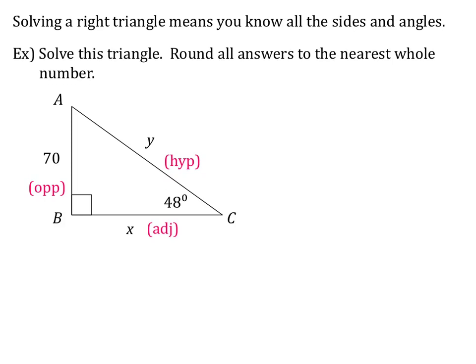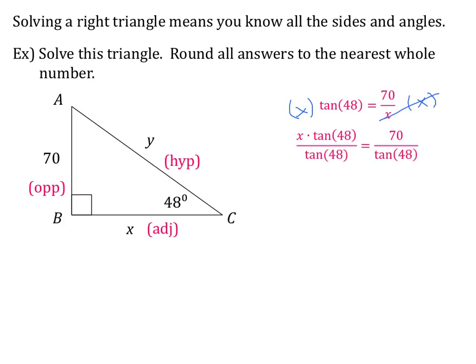70 and x have an opposite and adjacent relationship, so I'll use TOA — tangent. Tangent of 48 equals 70 over x. Multiply both sides by x so it cancels on the right: x times tangent of 48 equals 70. Then divide both sides by tangent of 48 to isolate x: x equals 70 over tangent of 48. Plugging into the calculator, x is approximately 63.